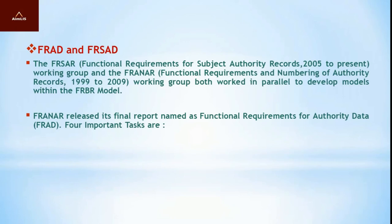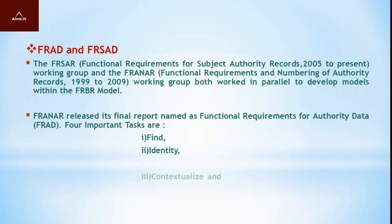By the time FRANAR released its final report, named Functional Requirements for Authority Data (FRAD) — formerly known as Functional Requirements for Authority Records (FRAR) — it produced a Conceptual Entity Relationship Model. This model focuses on four important tasks: 1) Find — find an entity or set of entities corresponding to stated criteria; 2) Identify an entity; 3) Contextualize — place a person, corporate body, work, etc. in context; and 4) Justify — choosing the name or form of name on which an access point is based.